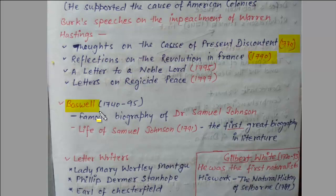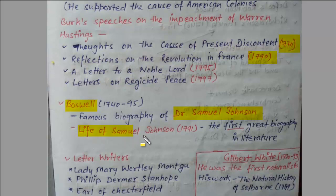Next is Boswell and his famous biography of Dr. Samuel Johnson. This is asked several times in exams — who is the writer of the famous biography of Dr. Johnson? It was Boswell, who lived between 1740 to 1795. He wrote 'Life of Samuel Johnson' in 1791, which is called the first great biography in English literature.